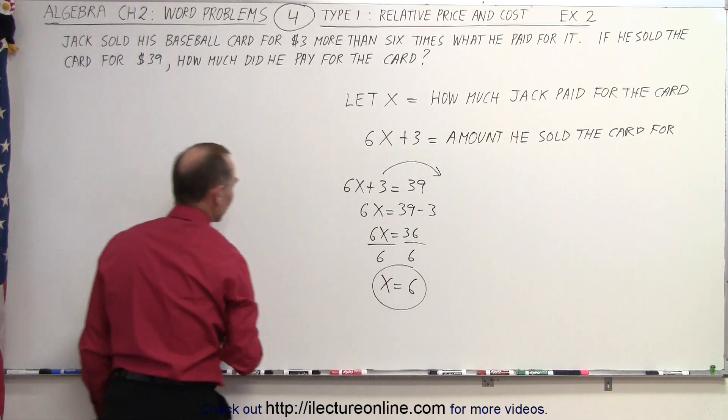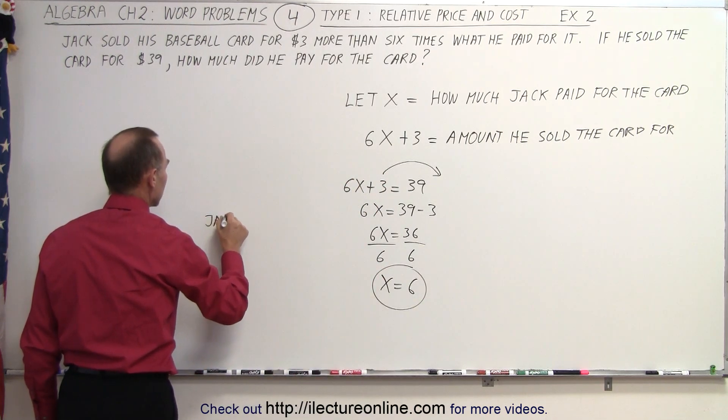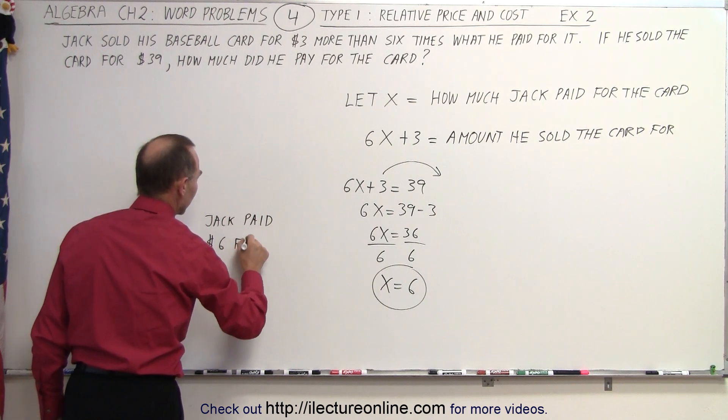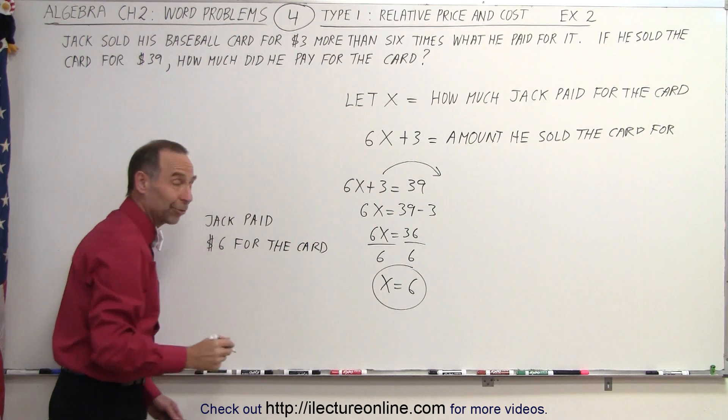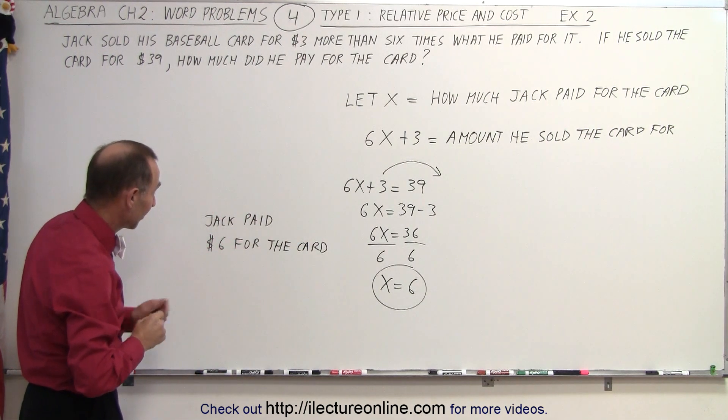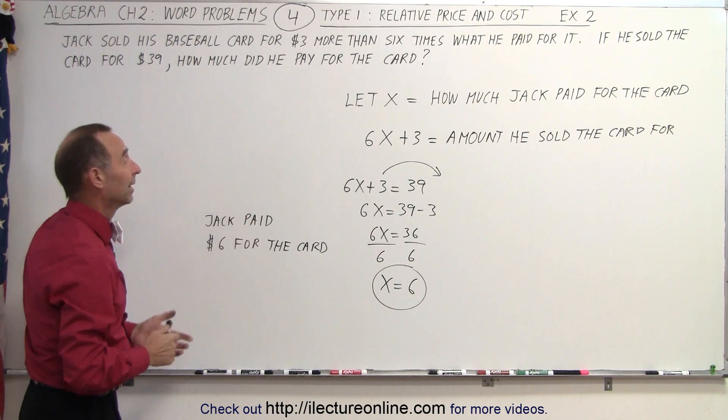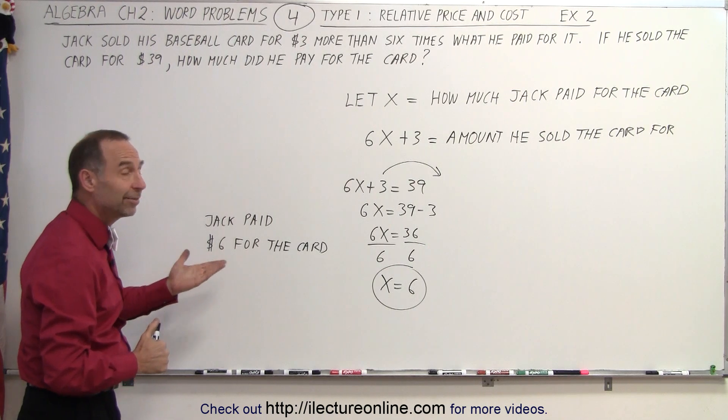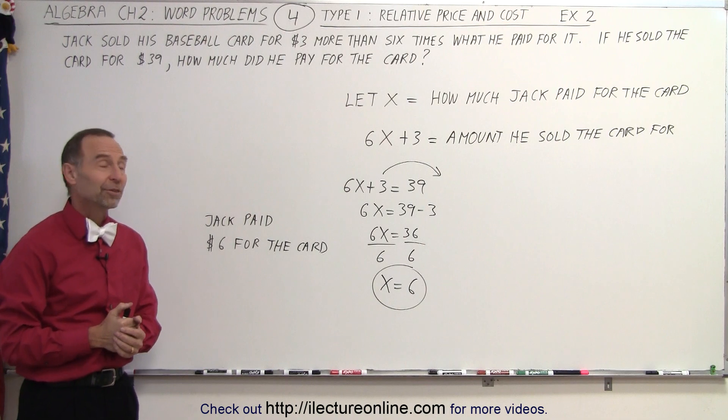That means Jack paid $6 for the card when he bought it. That's a pretty good return on his investment—if he only paid $6 to sell for $39, that's pretty good. That's how we solve this type of word problem.